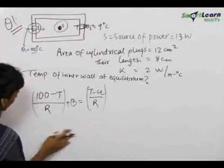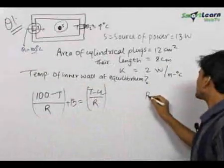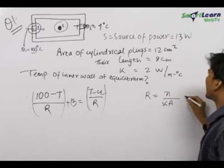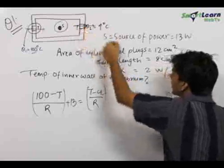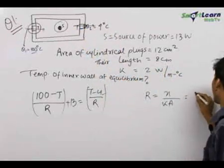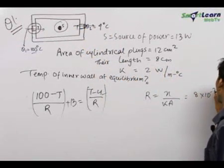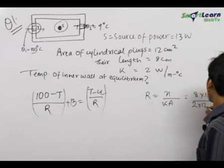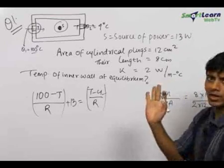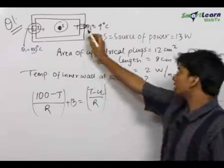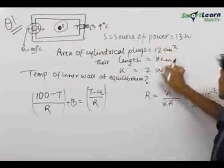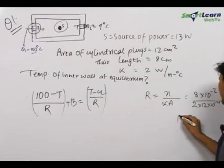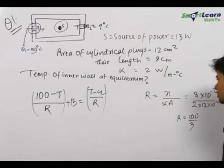To solve this, let us first find out the value of R. R equals X/(K·A), where X is the length through which the current travels, that is 8 centimeters, K is 2, and A is the area of cross section. This area should always be the area perpendicular to the heat current, which comes out to be 12 cm², that is 12 × 10⁻⁴ m². On solving this, we get R = 100/3.